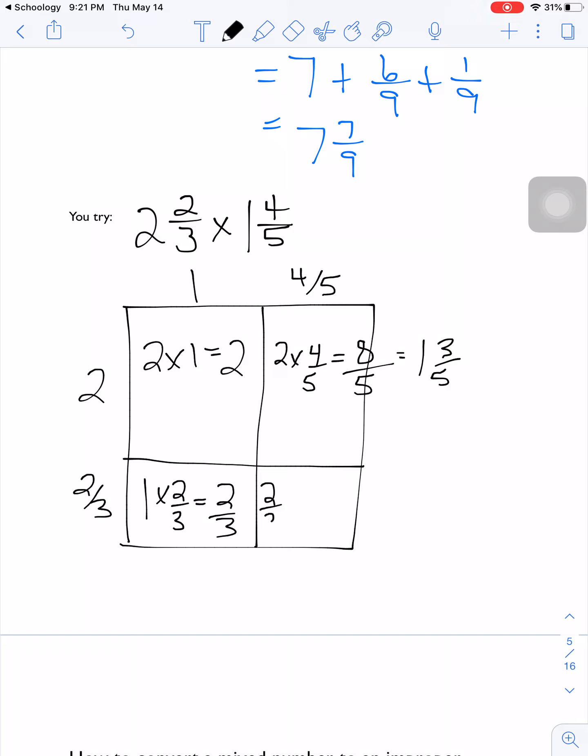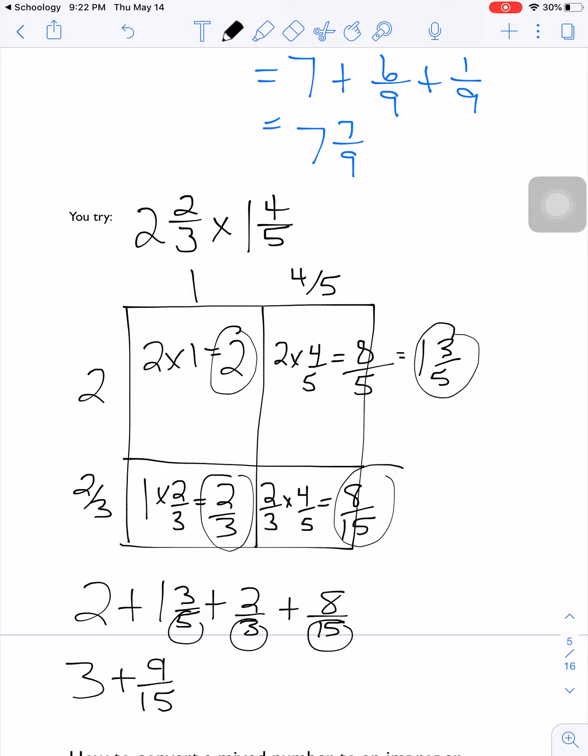1 times 2/3 is going to be 2/3, and 2/3 times 4/5 is going to be equal to 8/15. So now I just have to take these four areas and add them together to get my answer. So I've got 2 plus 1 and 3/5 plus 2/3 plus 8/15. I can add the whole numbers, I've got 3 wholes. And then I've got to use the common denominator to add these fractions. That would be a common denominator of 15. So I'm going to have 5 times 3 is 15, so then 3 times 3 is 9 plus 3 times 5 is 15. 2 times 5 is 10/15 plus 8/15.